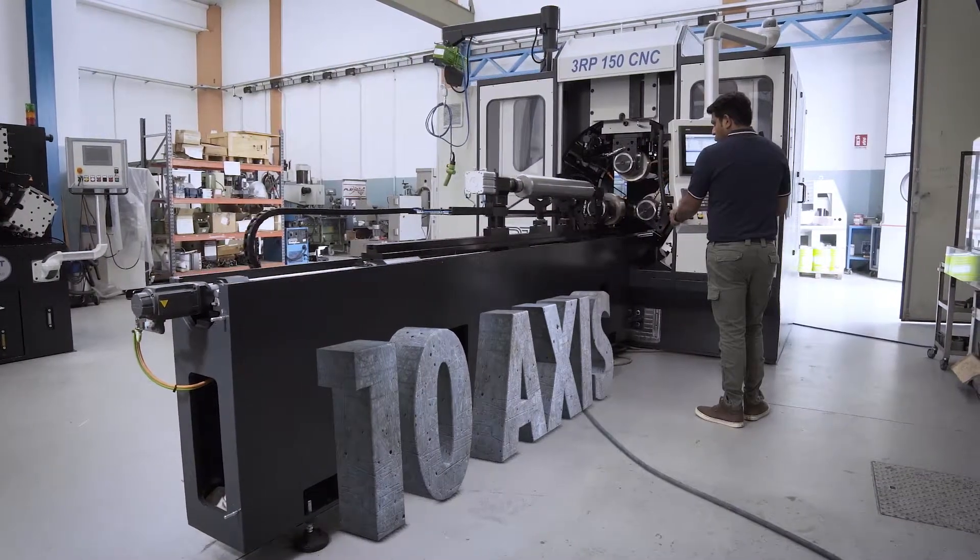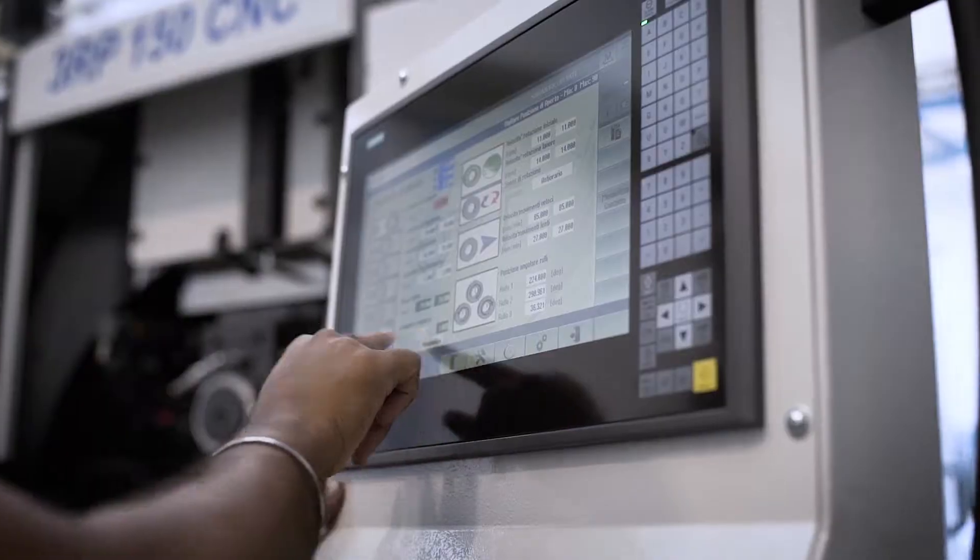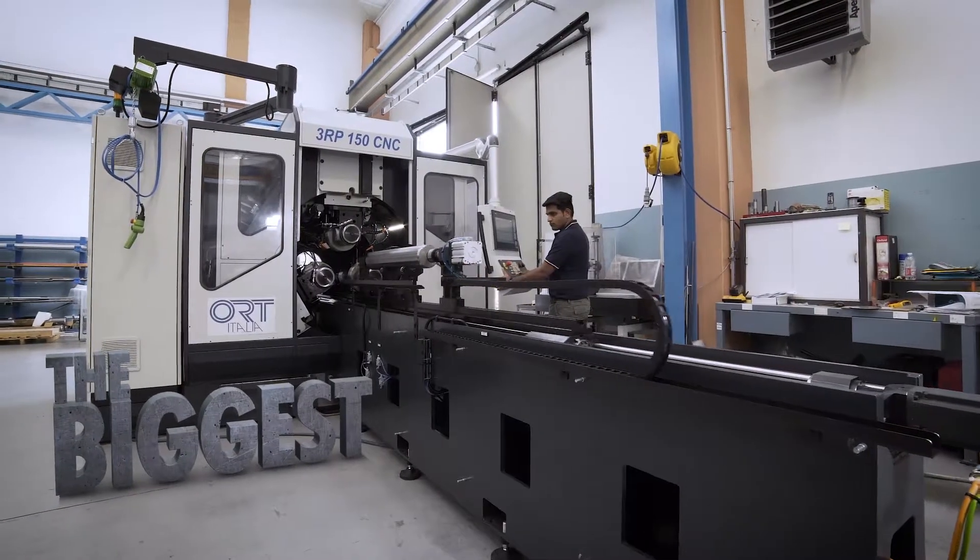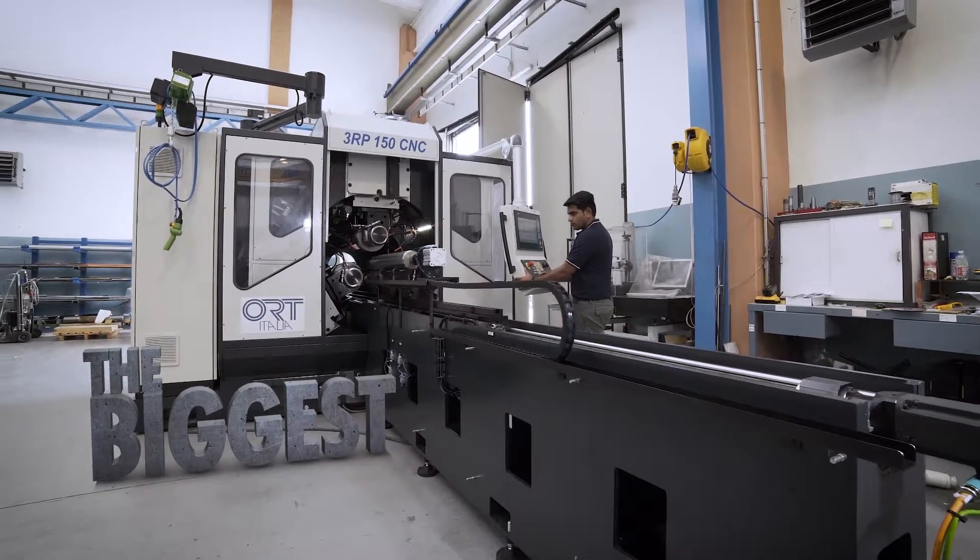The new 10-axis numeric control thread rolling machine, 3RP150 EVO, is the biggest sized machine ever produced by ORT Italia.